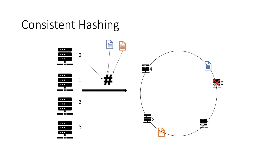The same thing happens when a new server is added. Suppose we add server 5 — earlier the orange document was assigned to server 3, but now it will be assigned to server 5. So whenever you are adding or removing machines you don't need to redistribute the whole of your data.